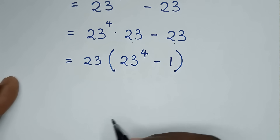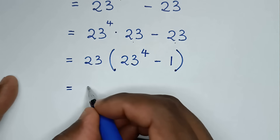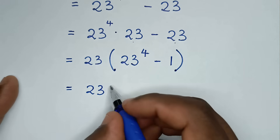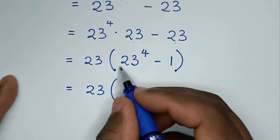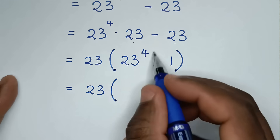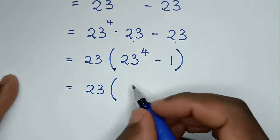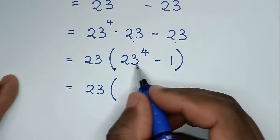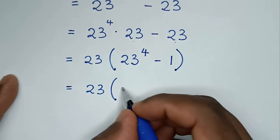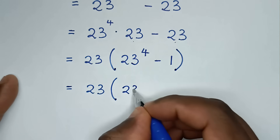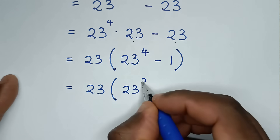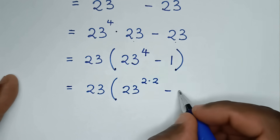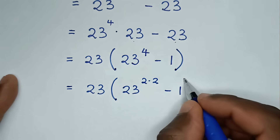Then in the next step it will be equal to 23, then bracket — this 23 power 4 we make in the form of squares, so 23 power 4 is the same as 23 power 2 times 2, then minus 1, bracket.